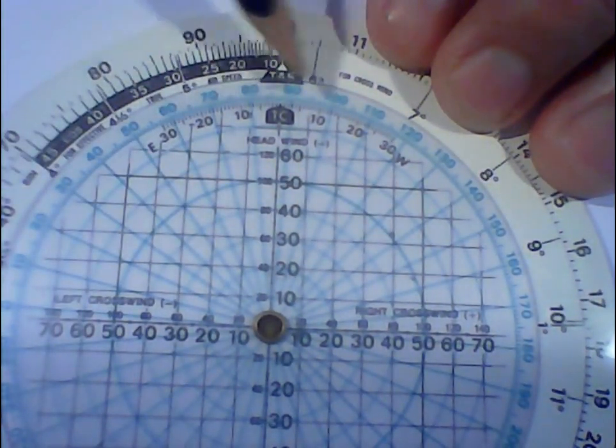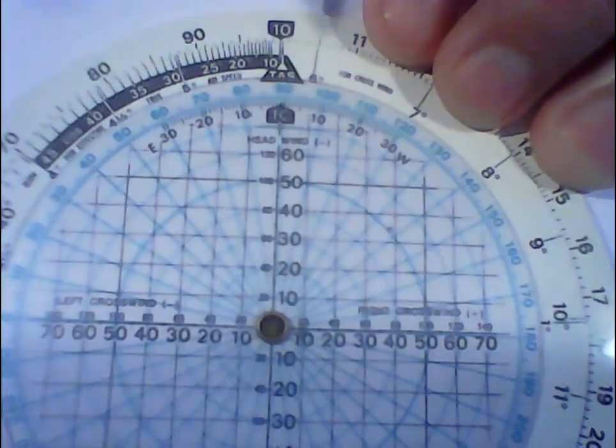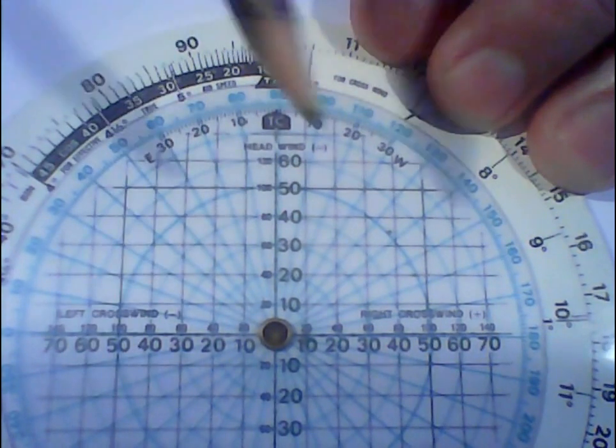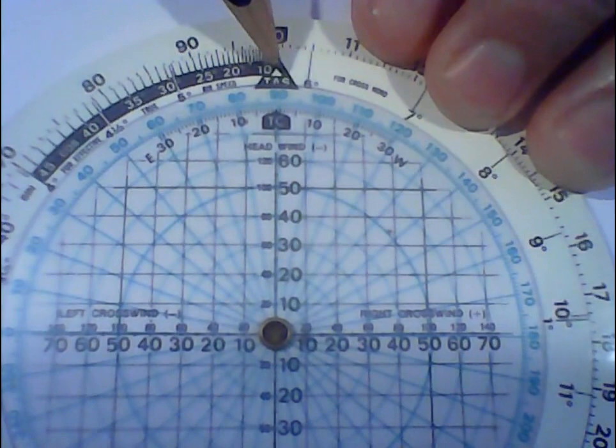The green scale, you set the wind that is blowing at the top. So in this case, it's 090. If it was, say, 150, then I'd set that around there at the top.